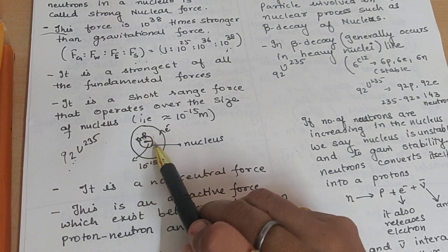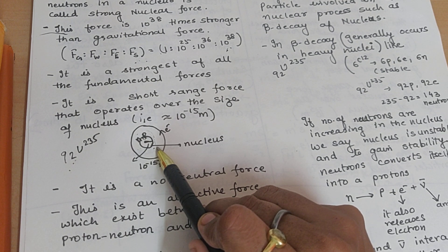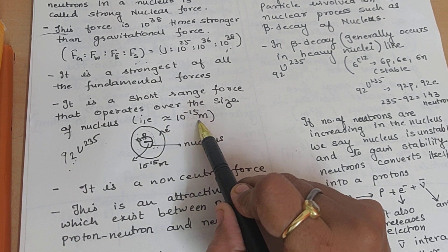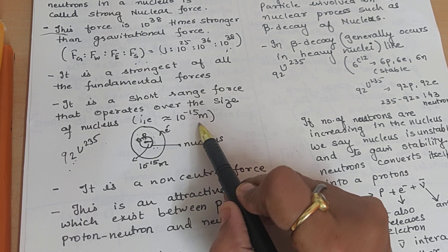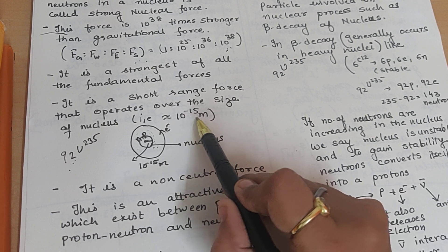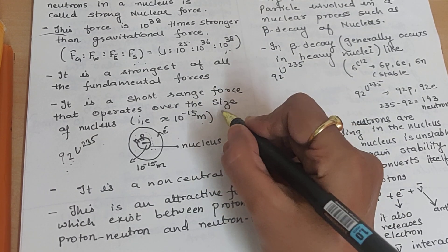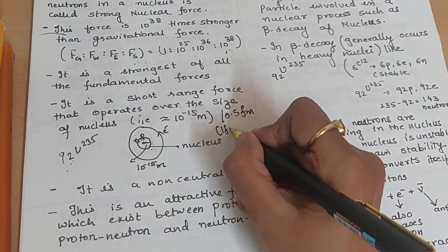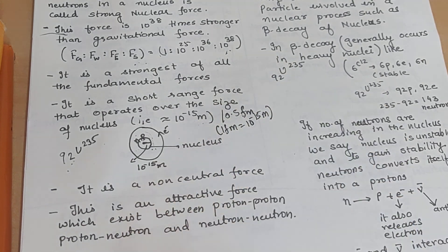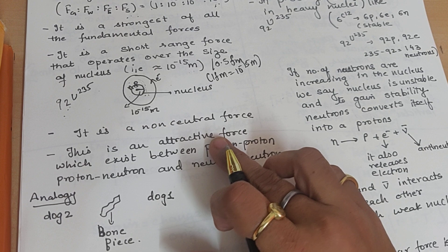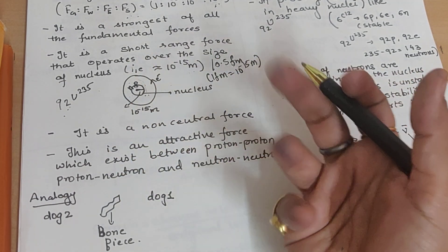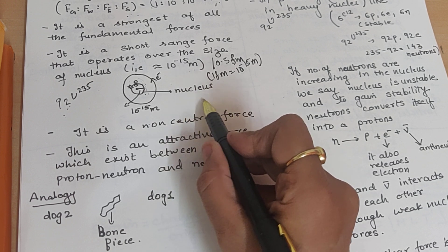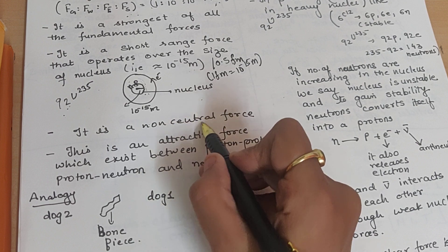However, it is a short-range force because it exists only within the nucleus, where protons and neutrons are located. This short-range force exists up to nearly 10 raise to minus 15 meters, which is the size of a nucleus — approximately 10 raise to minus 15 meters, or 0.5 fermi, where 1 fermi equals 10 raise to minus 15 meters. It is also a non-central force because protons and neutrons are arranged randomly inside the nucleus; it does not act along a fixed line joining two particles.